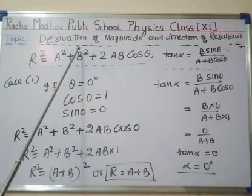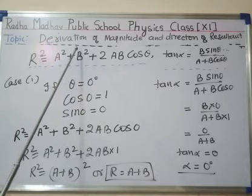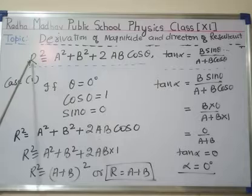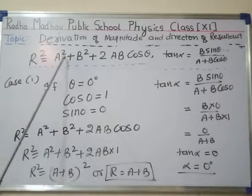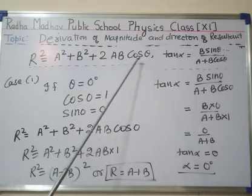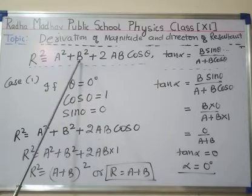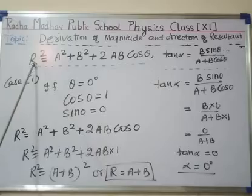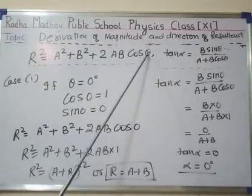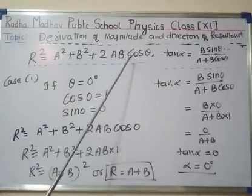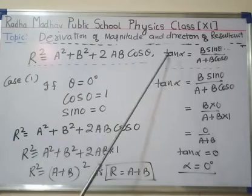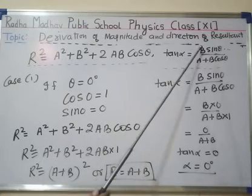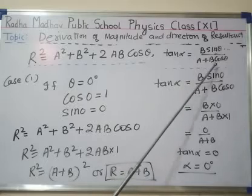Students, as we know, the formula for the magnitude of the resultant of addition of two vectors a and b is: r² = a² + b² + 2ab·cosθ, where a and b are the magnitudes of vector a and vector b, r is the magnitude of the resultant, and θ is the angle between a and b. Similarly, the angle between resultant r and vector a is given by tan α = b·sinθ / (a + b·cosθ).